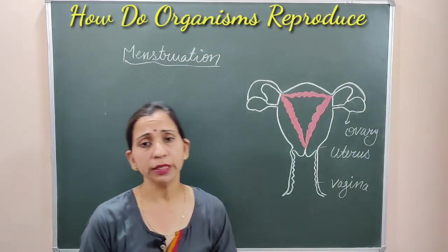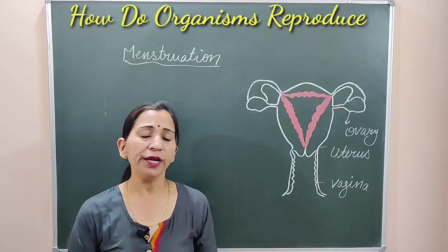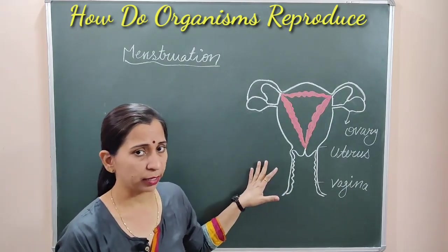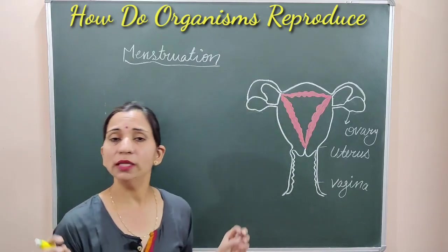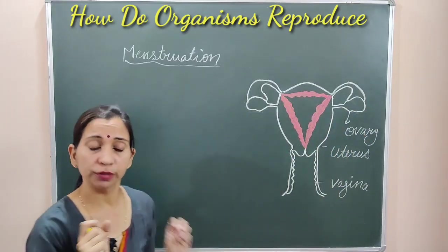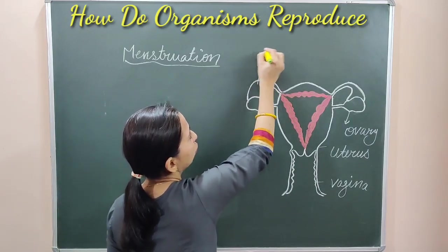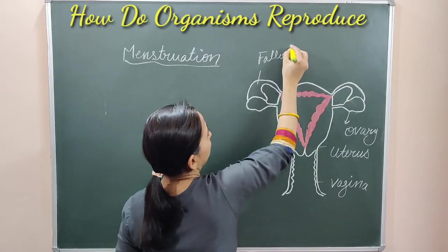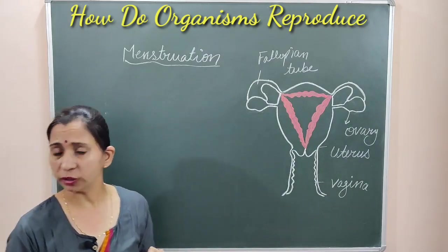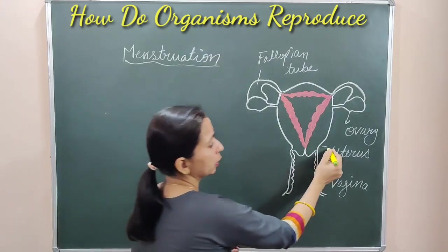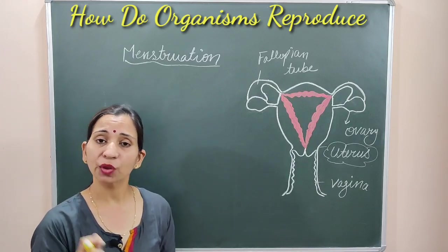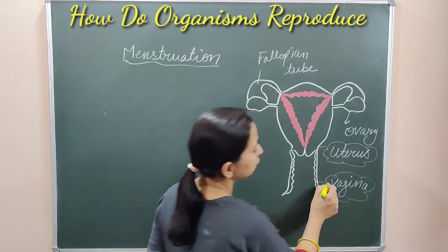Now what does it mean? We already discussed about the male and female reproductive system. This is the female reproductive system — you are well aware about all the parts. This is the ovary, this round almond-shaped structure. With the ovary, this tubular structure is known as the fallopian tube. These fallopian tubes are connected with a pear-shaped structure known as the uterus.